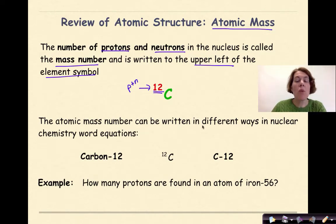The atomic mass number can be written in different ways in nuclear chemistry word equations, and you really need to be careful with this. So I could write it as the word carbon with a dash in 12. I could write it as the carbon symbol with the 12 in the upper left-hand corner. Or I could write it with the symbol of carbon, a dash, and the 12 after. The important thing to remember is that this is representing the atomic mass.